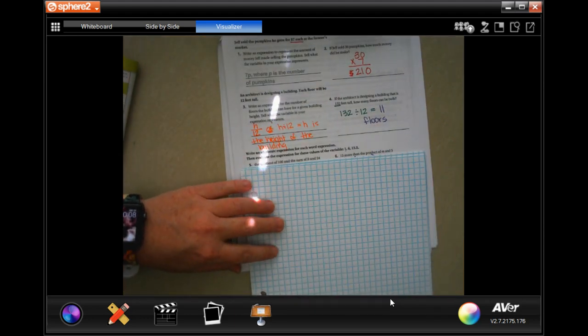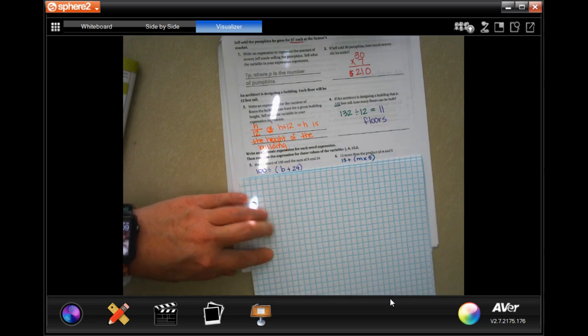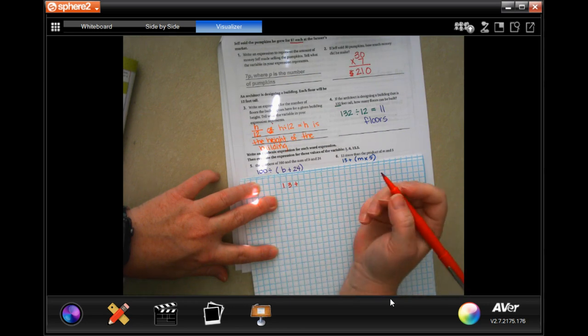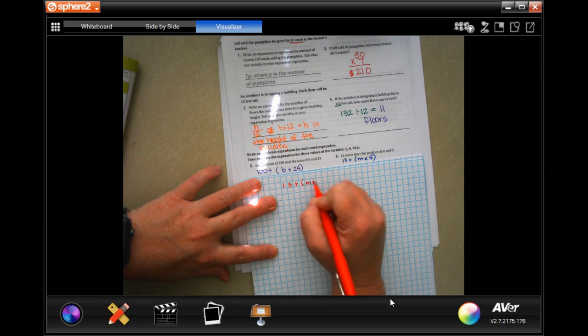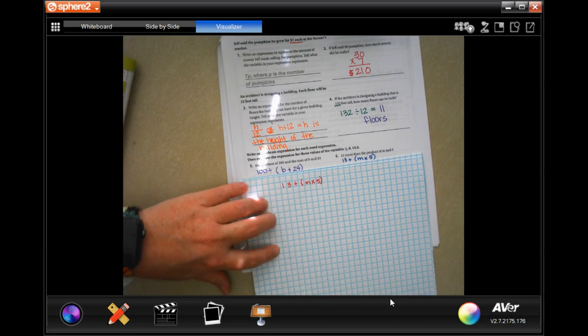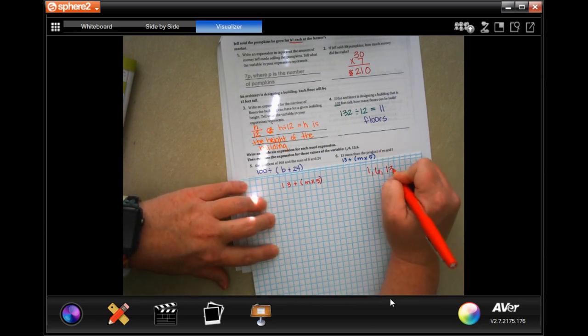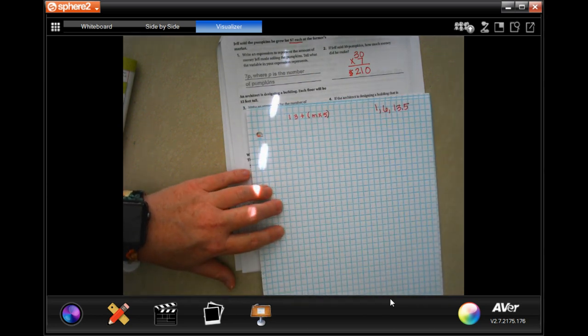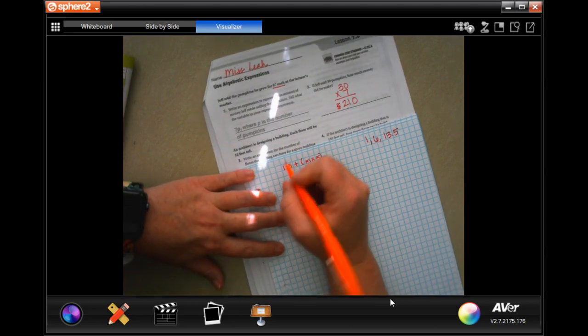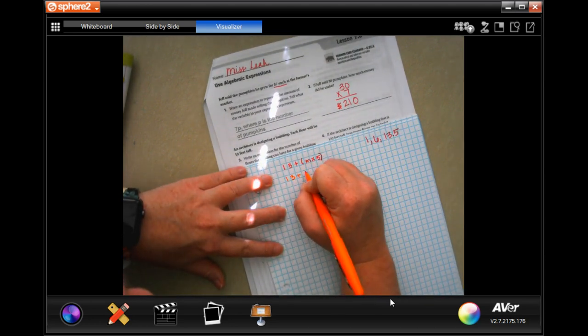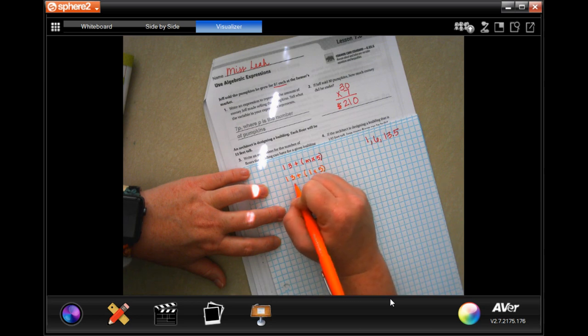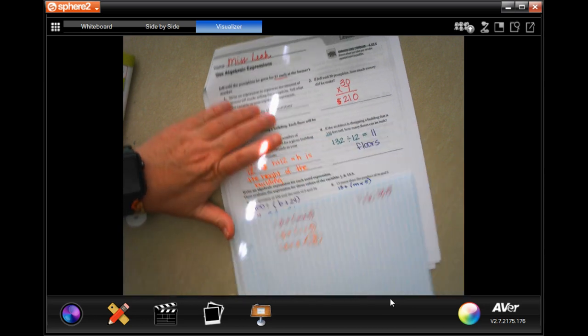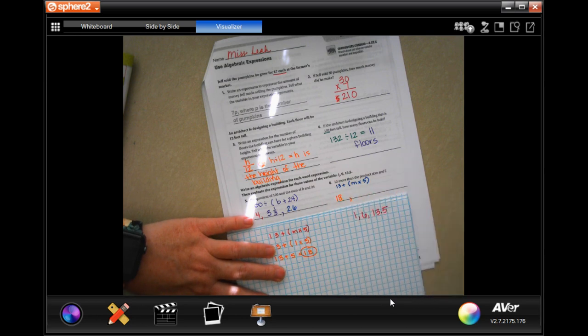All right, I'm going to get started on the next one on a new piece of paper that you can't see through. And it says, 13 more than the product of M and 5. Well, that one's pretty easy. So, it's 13 more, that's the sum, than the product of M and 5. So, again, we're going to fill in 1, 6, and 13.5. So now, we're going to have 13 plus 1 times 5. Well, 1 times 5 is 5, so 13 plus 5 equals 18. That's your first one.